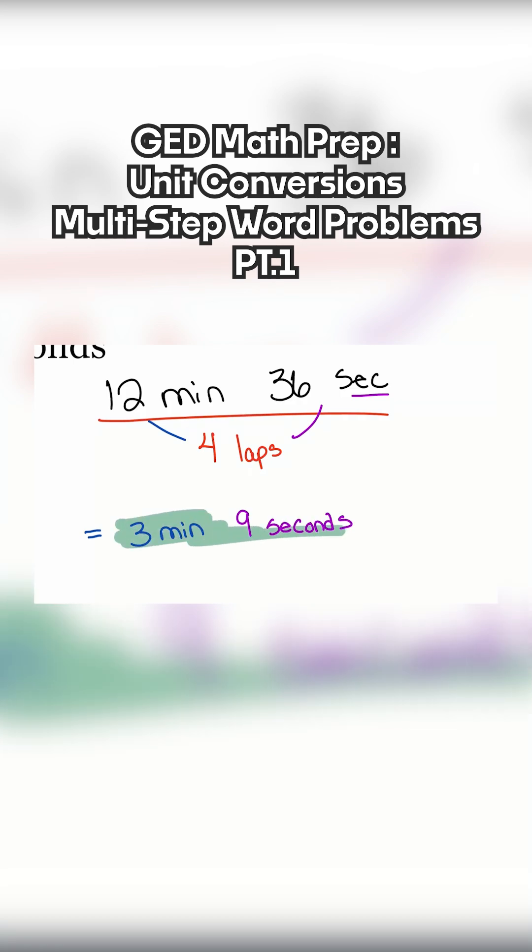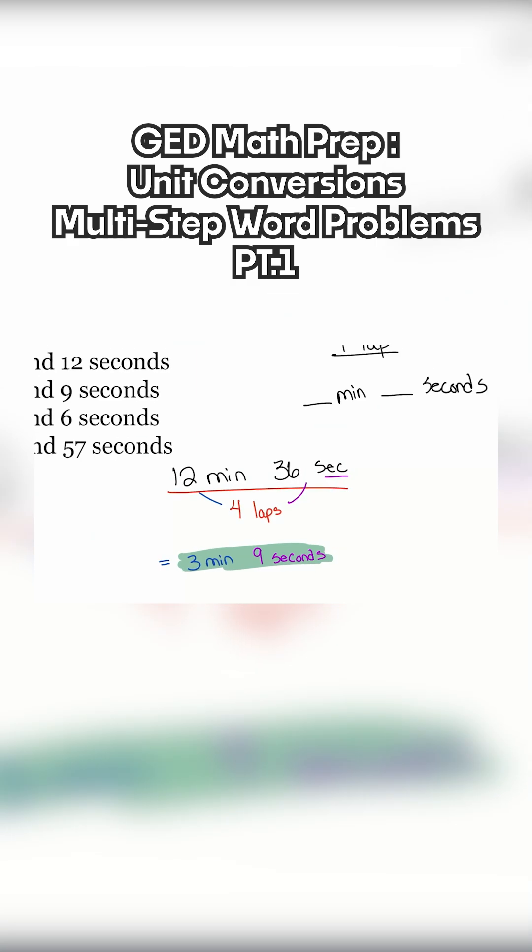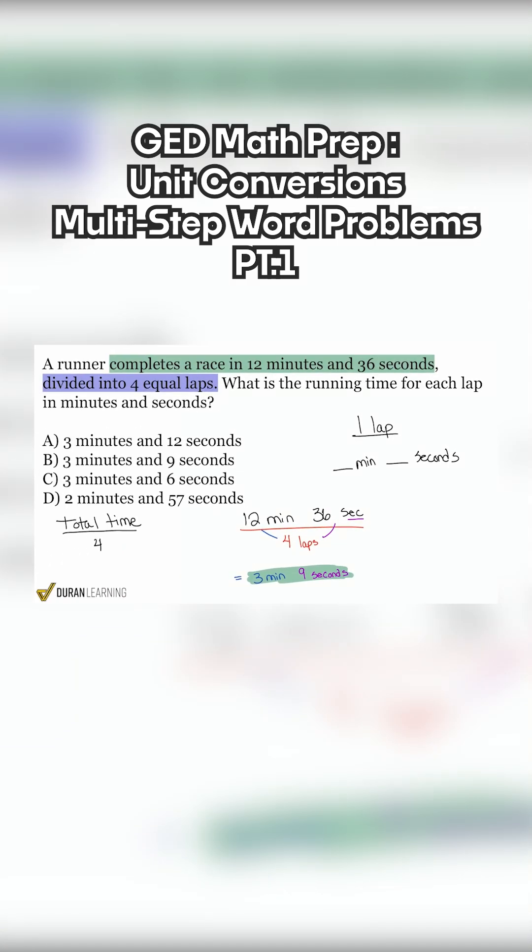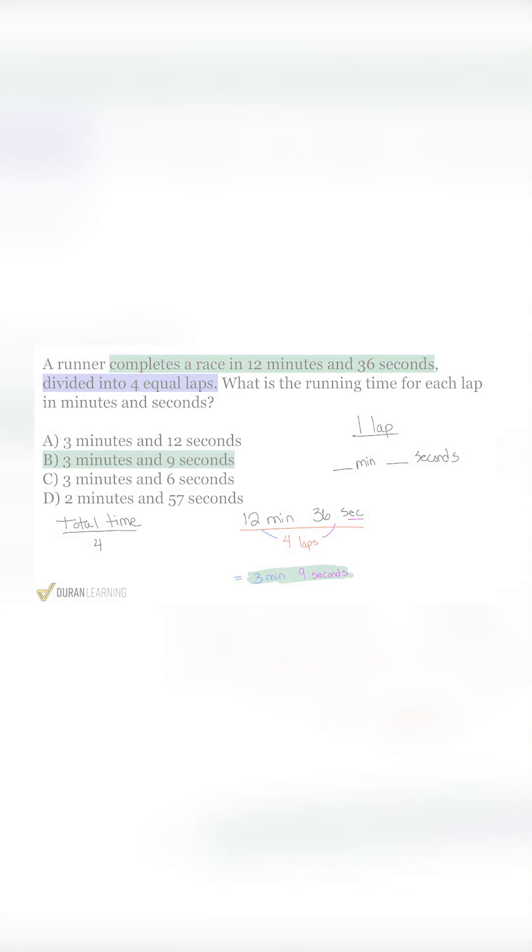Three minutes and nine seconds, because 12 minutes and 36 seconds is divisible by four. Both of those values are clearly divisible by four, and that could have saved you a ton of time, time that you can use on the next question.